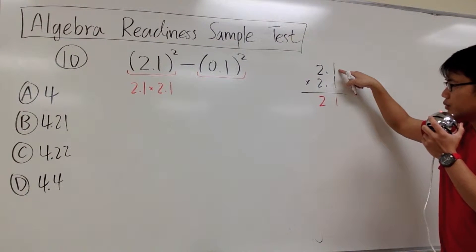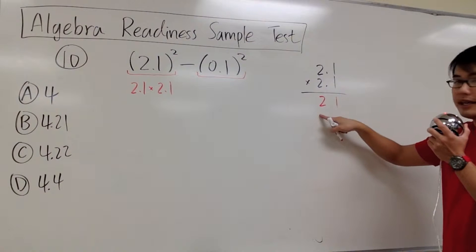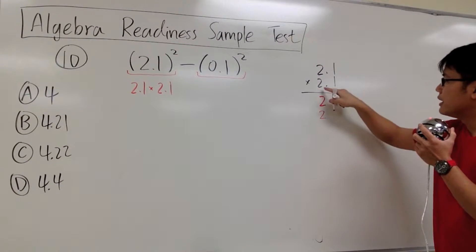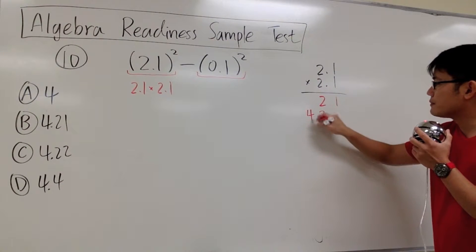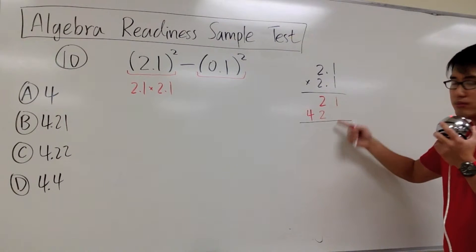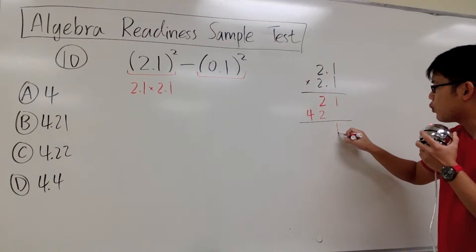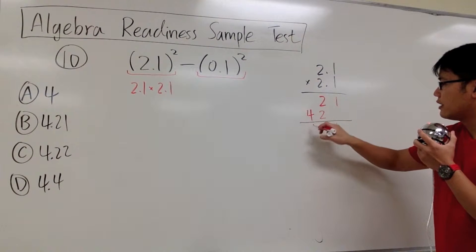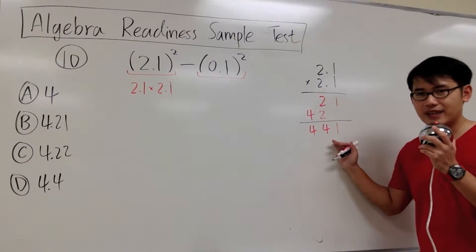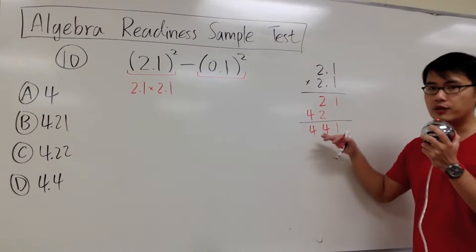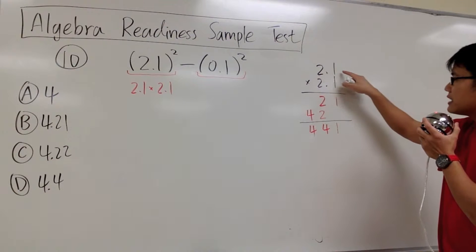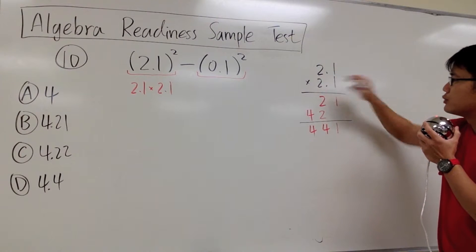2 times 1 will give us 2, and we put down the result right here for the second row. So 2 times 1 is right here — that's the 2. And then 2 times 2 will give us 4. Then we add the numbers together: 1, and this is technically 0, so 1 plus 0 gives us 1. 2 plus 2 gives us 4. And then the 4 is just the 4. But this is not the final answer yet — we have to see how many decimal places we need for the result, by counting how many decimal places we have altogether from these two numbers.